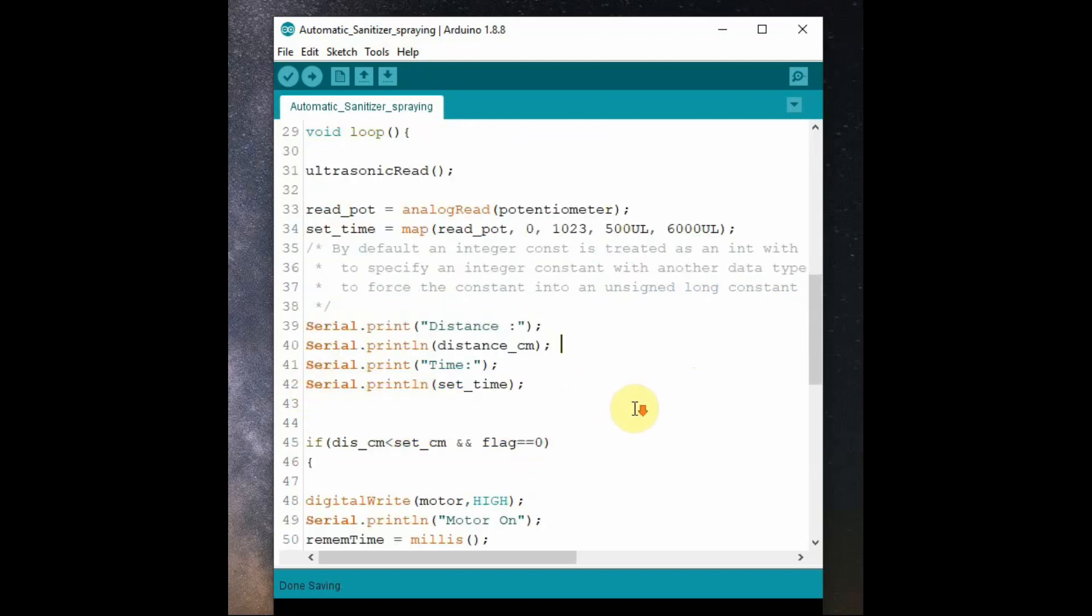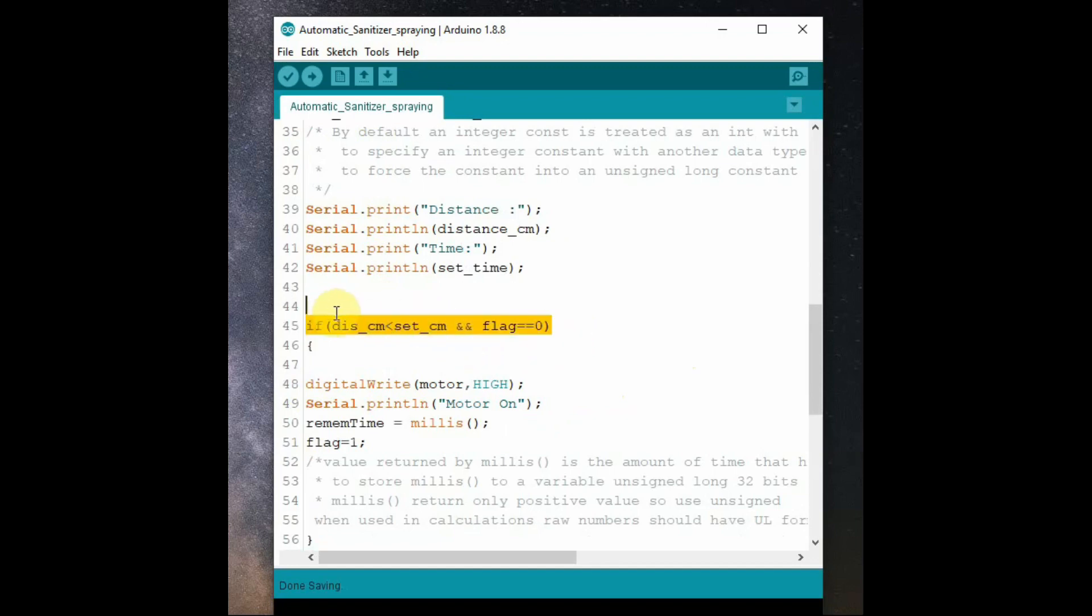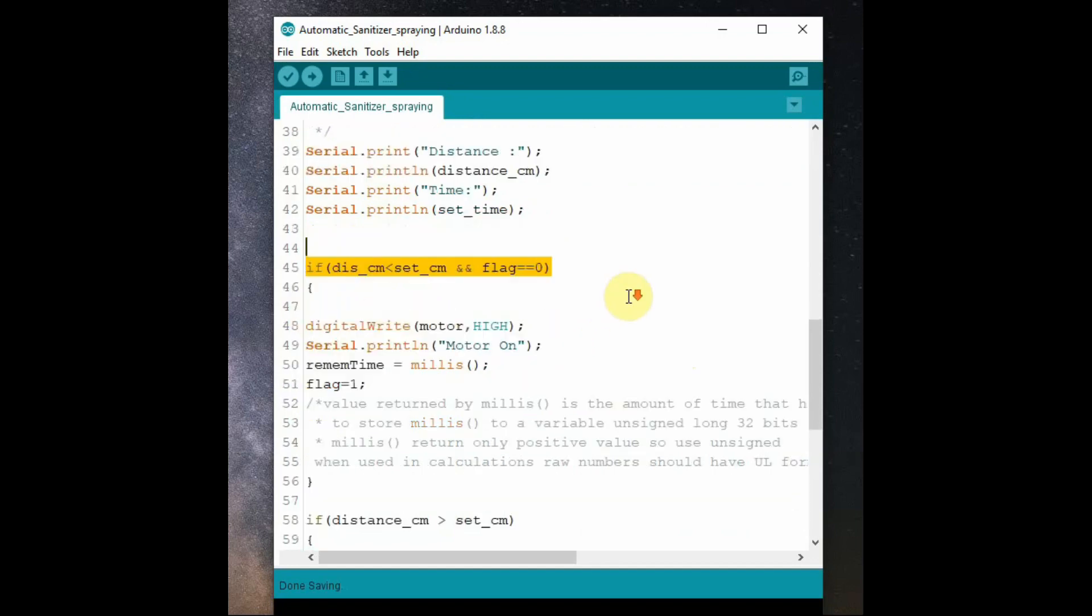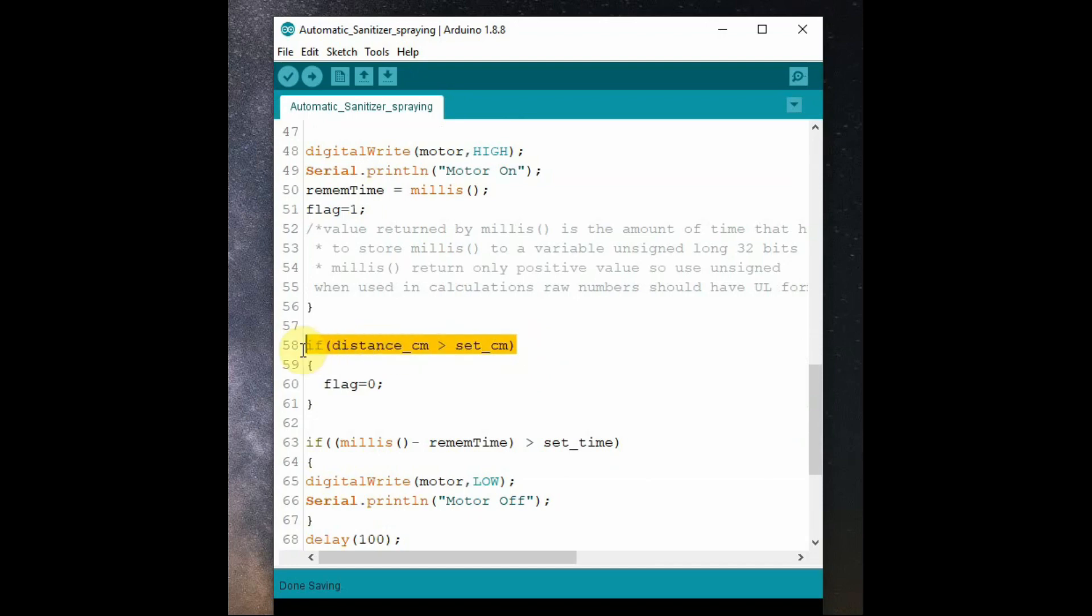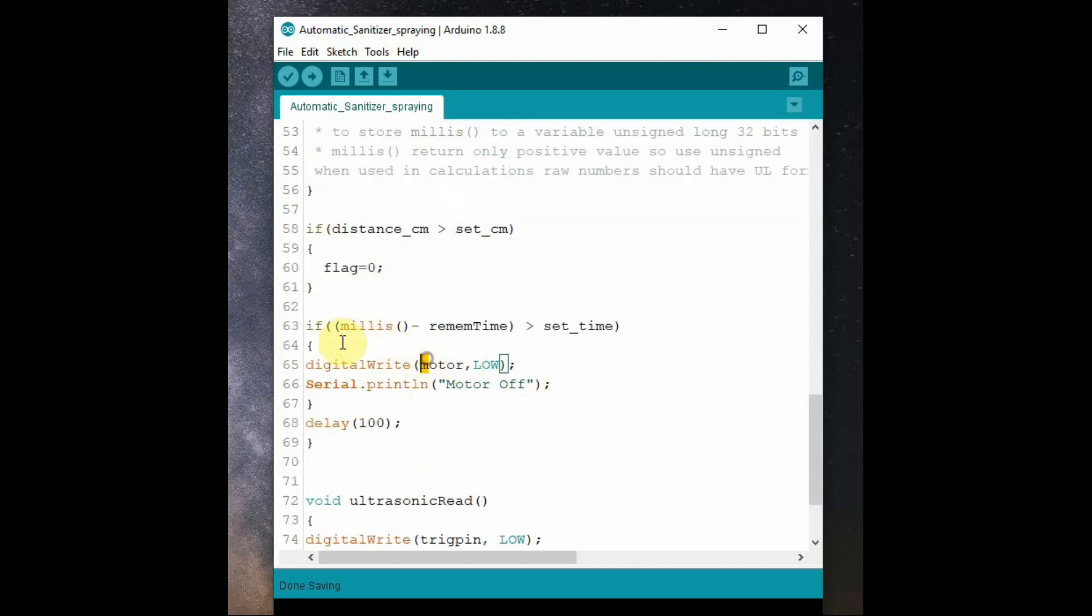And then the if condition is verified: if distance is less than set value and also the flag is 0, the motor is made on by making the pin to high. The MOSFET will drive the motor. Notice the usage of millis function here to keep track of time. Millis keeps the amount of time elapsed since the code is working, that is why we use unsigned long to store the time variable. And if the distance is greater than the set distance the pump is made off, that is the pin 2 is made low and then the MOSFET goes off thus making the pump off.